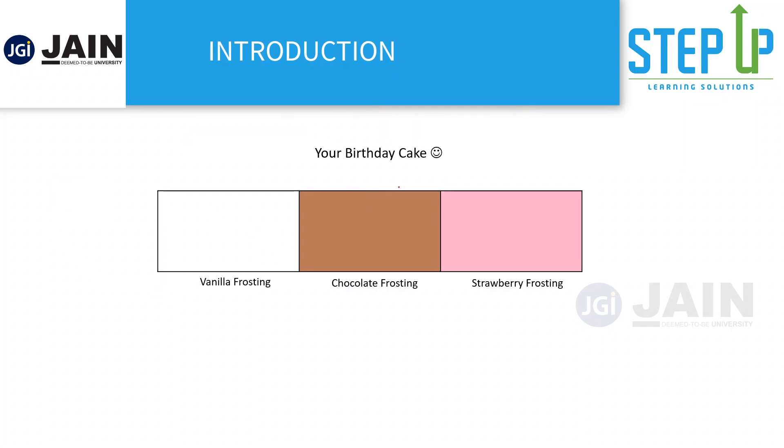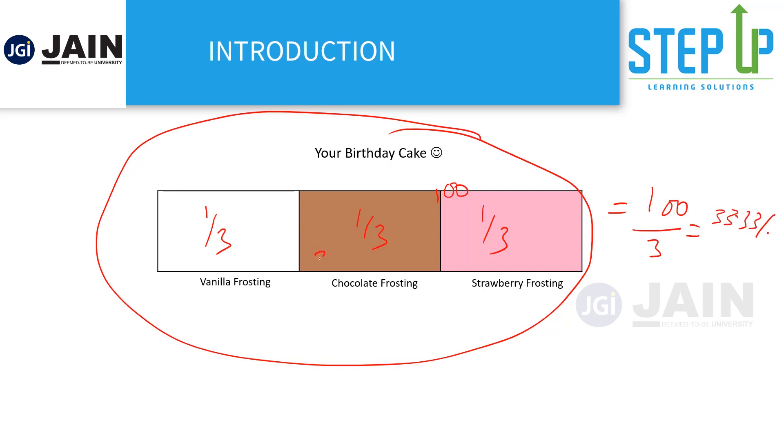Imagine I have your birthday cake here. Let's say your birthday cake has three flavorings: vanilla frosting, chocolate frosting and strawberry frosting. If I ask you what percentage of your cake is actually chocolate frosting, these are three equal parts and the entire cake is nothing but 100%. If this entire thing is 100%, this is 1 by 3 part, this is also 1 by 3, this is also 1 by 3. So if total is 100, it would be 100 by 3, which is nothing but 33.33 percentage.